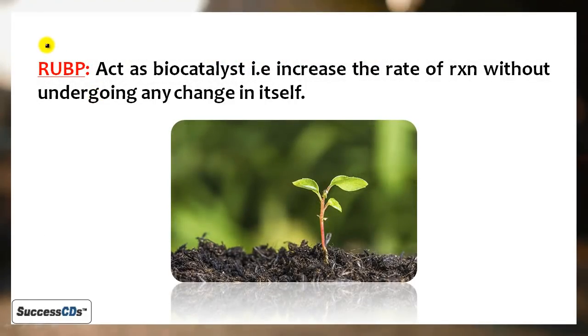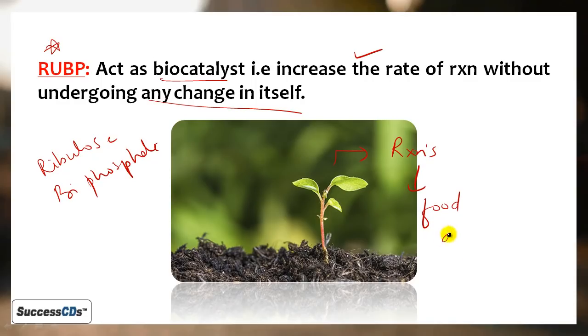What is RuBP? You should be familiar with this term. This is ribulose bisphosphate. It's an enzyme catalyst, a biocatalyst, that just helps the reaction occur without getting any change in itself. In some books you may find RuDP instead of RuBP - it's the same thing, just bi replaced with di. The function is the same.